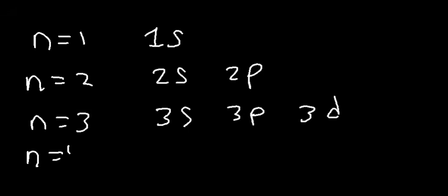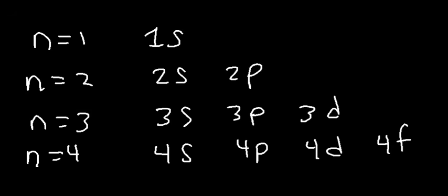When N is 4, there are four sublevels: 4S, 4P, 4D, and 4F. The S sublevel can hold up to two electrons, and every orbital can hold up to two electrons. So S has one orbital. In the periodic table, the S block is really the first two columns — group 1 and group 2.